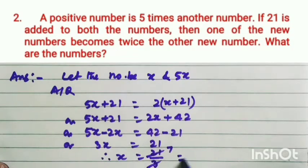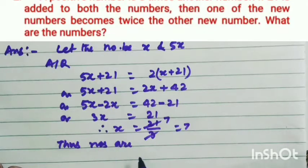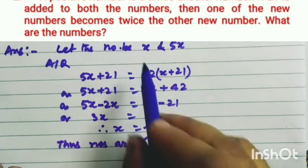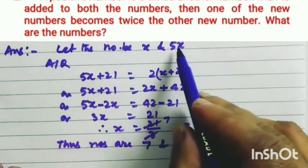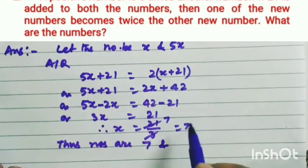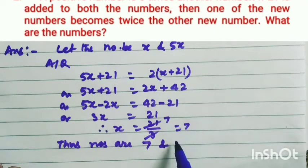Therefore, x equals 21 by 3, which is 7. Thus, the numbers are: first number is x, so 7. And second number is 5x, so 7 into 5 equals 35.